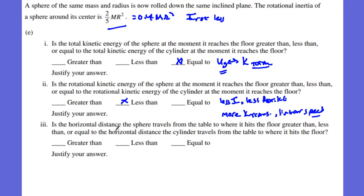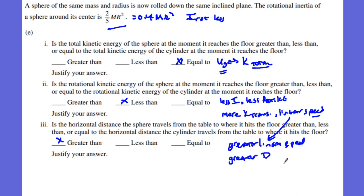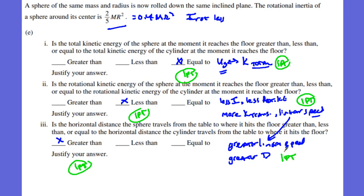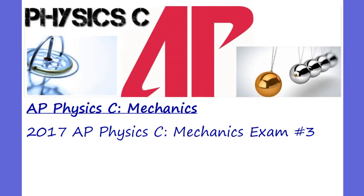The last question asks about horizontal distance — it is greater than the cylinder's. Because there is greater linear speed as the sphere leaves the table, and the time of flight is the same, the horizontal displacement is greater. Each of these three sub-parts is worth 2 points — one point for the comparison and one for the explanation. And that, my friends, is the 2017 AP Physics C Mechanics Exam, problem number three. Have a great day.